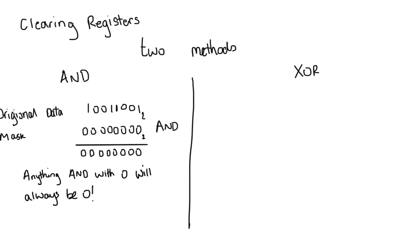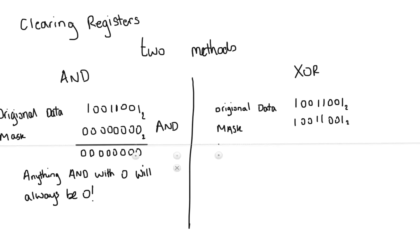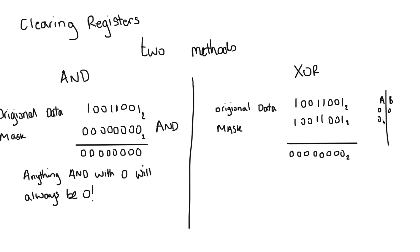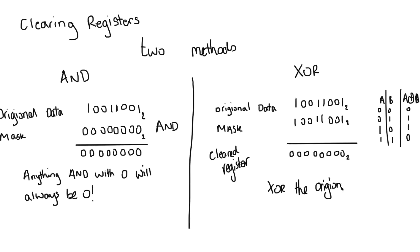Our next method uses XOR. To use an XOR operation to clear a register, I take the original data and XOR it with a mask containing exactly the same data. Once I've done that, I XOR all the data and you'll notice that it returns all zeros — you can see why from the truth table. Because both registers are the same, I get all zeros. The key to this method is to XOR the original data with itself.